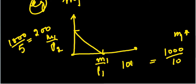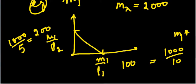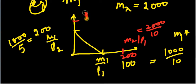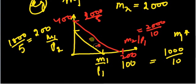So the intercept on the x1 axis was 1000/10 = 100, and on the x2 axis it was 1000/5 = 200. Now with income M2 = 2000, the new intercepts become 2000/10 = 200 and 2000/5 = 400. So the budget line shifts outwards — there is a parallel shift of the budget line.